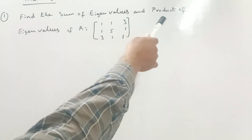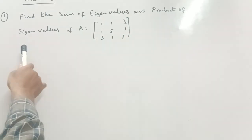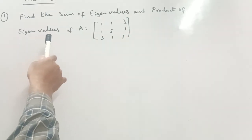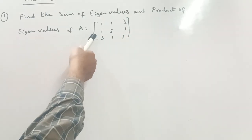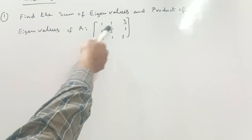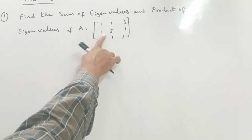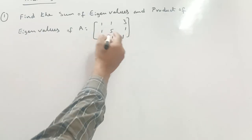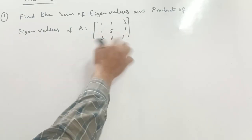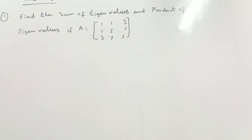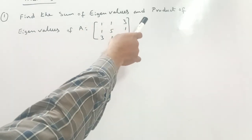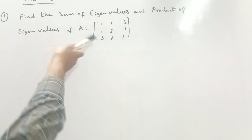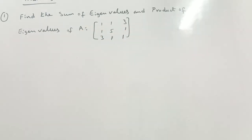Find the sum of eigenvalues and the product of eigenvalues of matrix A: 1, 1, 3, 1, 5, 1, and 3, 1, 1. What is being asked here? The sum of eigenvalues and product of eigenvalues.